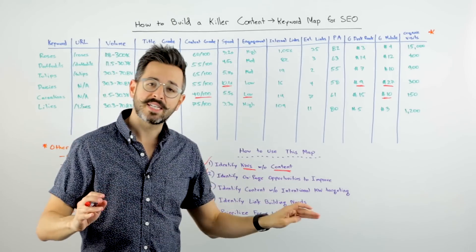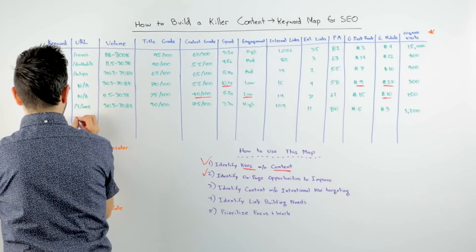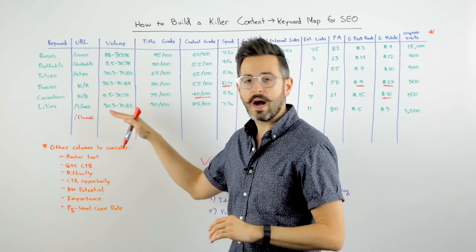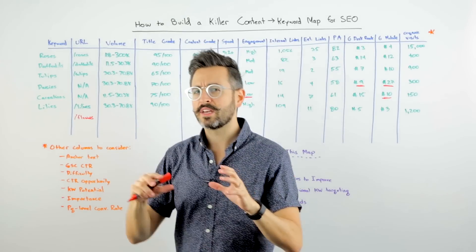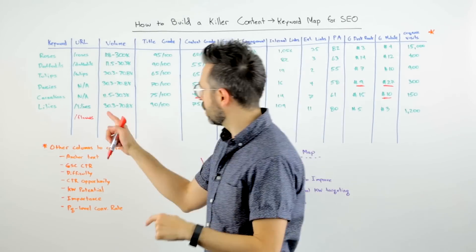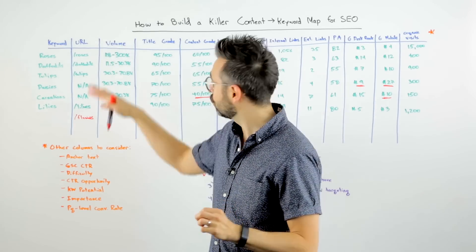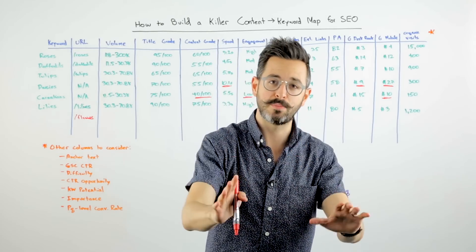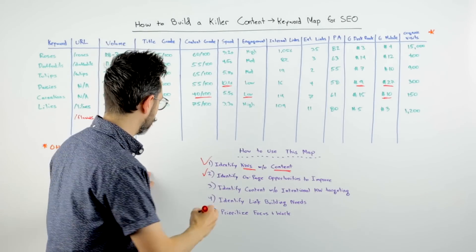You can also identify content without intentional keyword targeting. You might find something like a /flowers URL that offers all your different flower options, but you haven't intentionally chosen what keyword you're targeting. Are you selling flowers for delivery? Should you be targeting that? Flowers for planting in your backyard? What is your keyword? Oftentimes when auditing a site, you will find tons of URLs that are intentionally targeting no specific keyword but should be — and all you need is some optimization work to help those URLs target the right keywords.